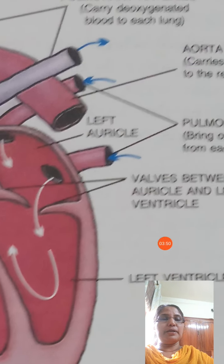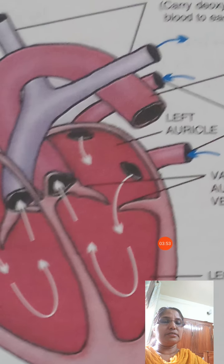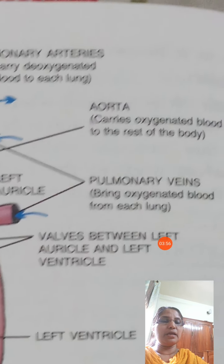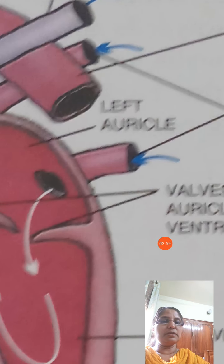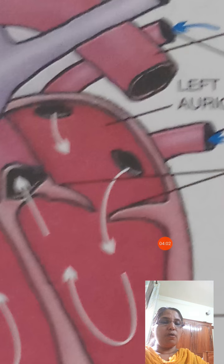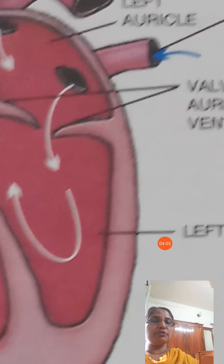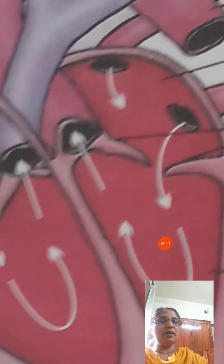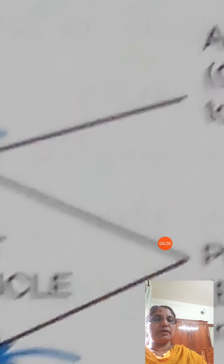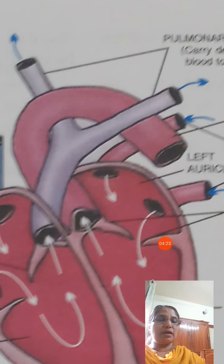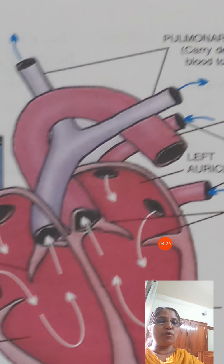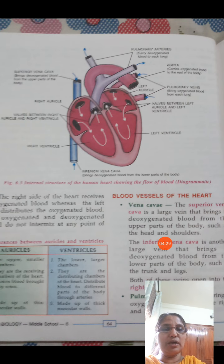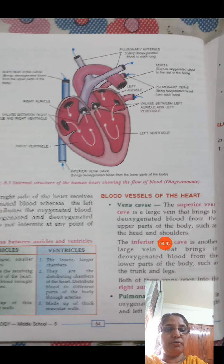From the lungs, oxygenated pure blood returns through the pulmonary veins. The pulmonary veins fill the left auricle. Then from the left auricle, through the valve, blood comes to the left ventricle. From the left ventricle, the largest blood vessel — known as the aorta (A-O-R-T-A) — supplies blood to all parts of the body. This is the structure of the heart.